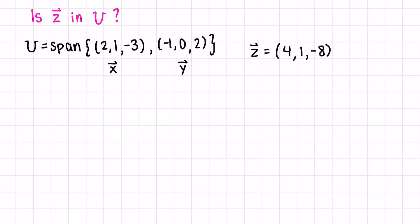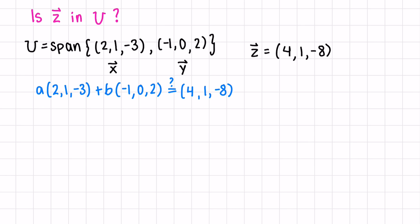Let's try an example. Is z in the vector space U? U is defined as the span of x and y, so all vectors in U can be written as a linear combination of x and y. Let's write a times x plus b times y, and check if this equals z for some a and b. Combining terms on the left side, we get 2a minus b, then just a in the middle, and for the last component negative 3a plus 2b.